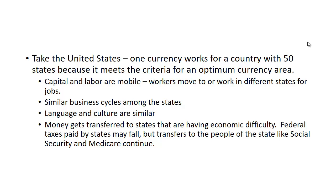A good way to look at this is to consider the United States. It is one country with 50 states, but one currency works because it meets the criteria for an optimum currency area. Capital and labor are mobile — workers often move from one state to another to find a job, sometimes moving all the way across the country. If the economy is poor in the Northeast, people may move to the Southeast or to the West.